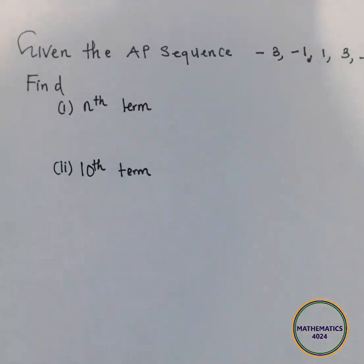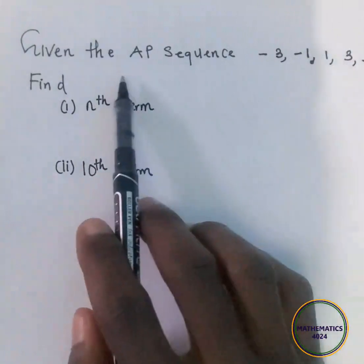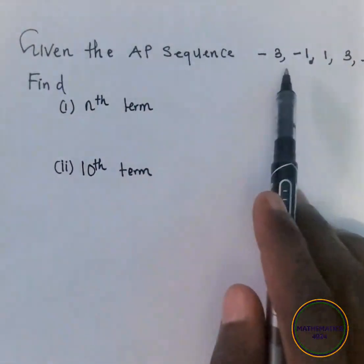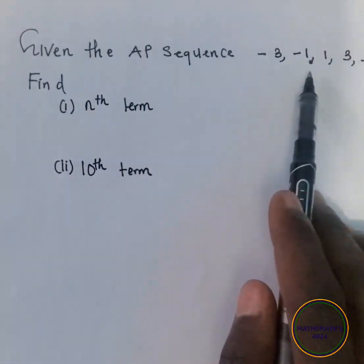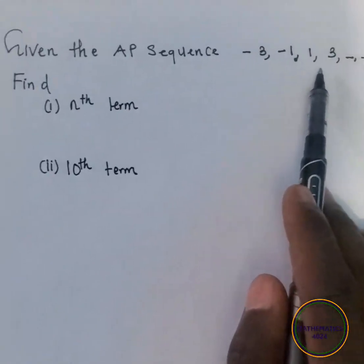So welcome to this video. I have a question which says, given the AP sequence, is given by negative 3, negative 1, 1, and 3.